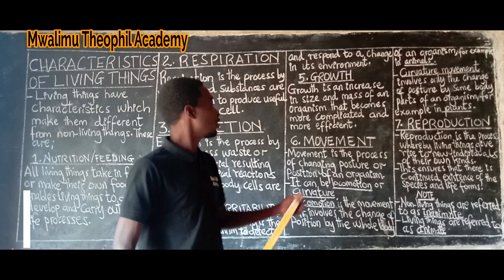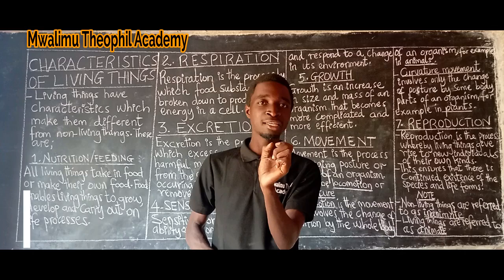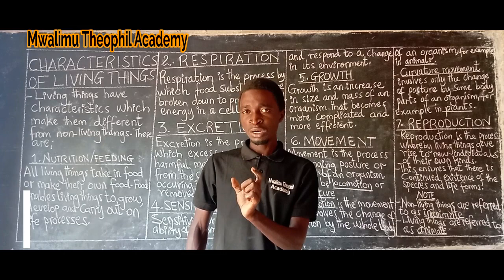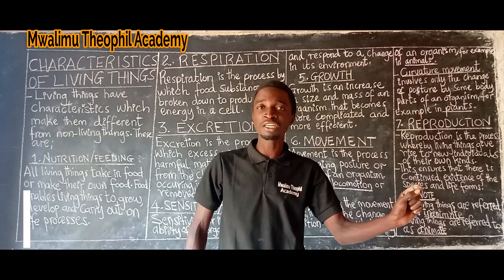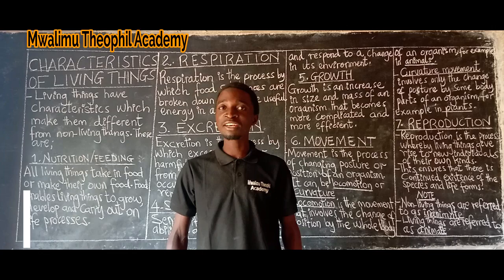Note that non-living things are referred to as inanimate. The term used to refer to non-living things is inanimate. Once you hear animate, it means the organism has features of living things; inanimate means we are referring to non-living things. I hope from this explanation of the seven characteristics of living things, the concept is now clear to you.